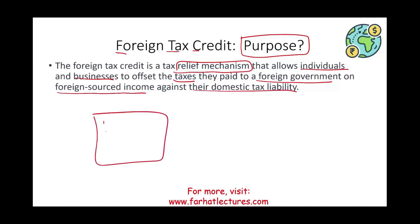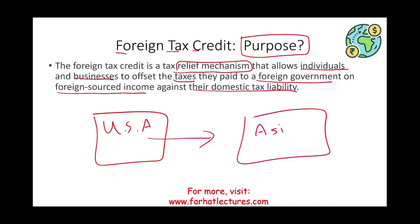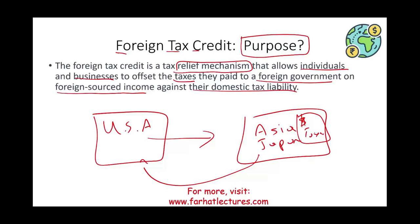Let's assume you are a USA citizen and you travel to Asia — let's say Japan — to work there. You're going to have to pay taxes in Japan. Because you have to report your worldwide income in the US, any money you earn in Japan must also be reported in the US. Since you paid taxes in Japan, you can use those taxes paid as a credit to offset your US tax bill.